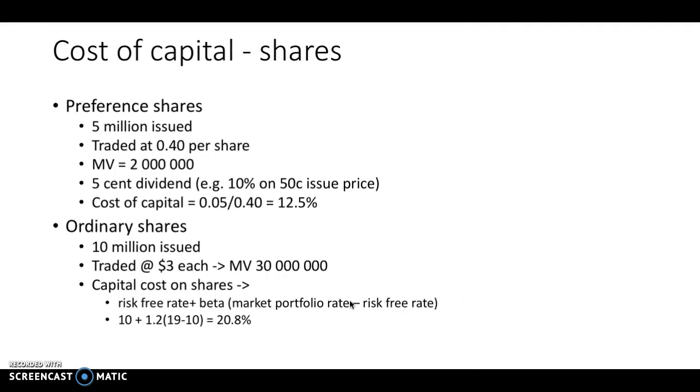Cost of capital. So we've got 5 million preference shares issued. They're traded at 40 cents per share, so they've got a market value of 2 million. There's a 5 cent dividend, which makes it 10% on 50 cent issue price. So the cost of capital there is 12.5%.